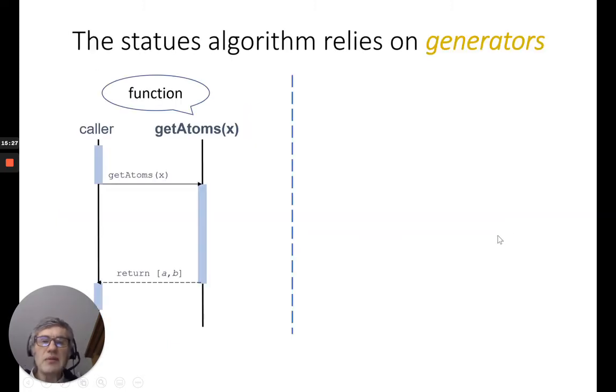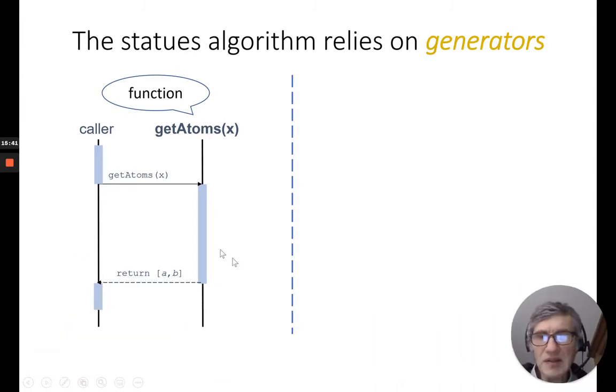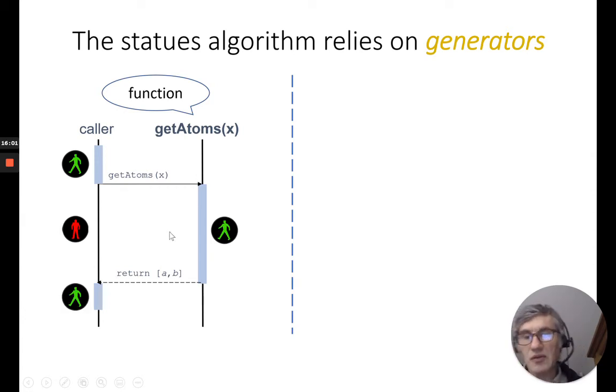Before entering the algorithm, I need to speak about generator. You have seen that word in the title. Maybe you know what it is. Anyway, I prefer to make a small recap about this. Probably all of you know about function. A caller calls a function, then the caller stops and waits that the function executes. At the end of execution of the function, the function returns some results to the caller. And then the caller can continue. Very simple so far.